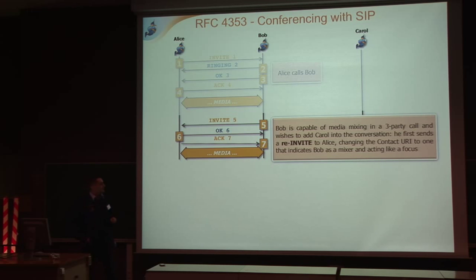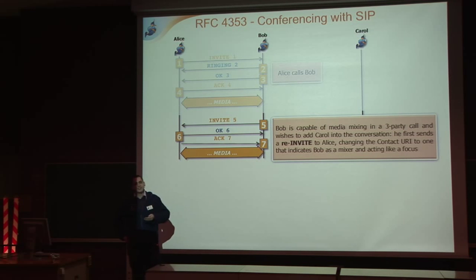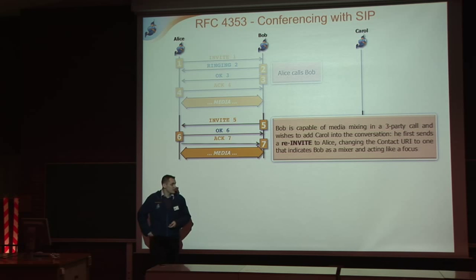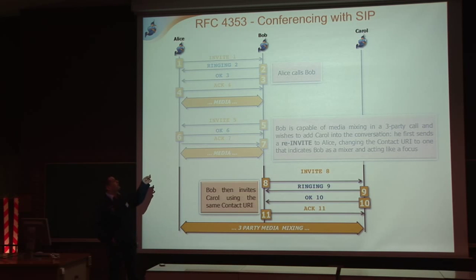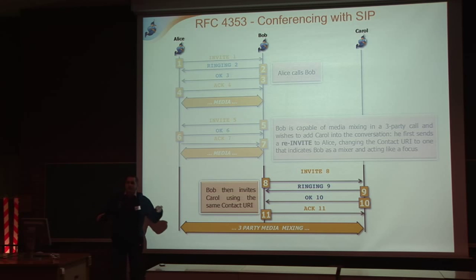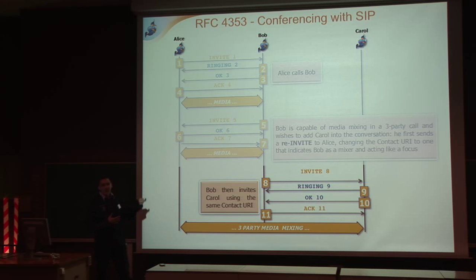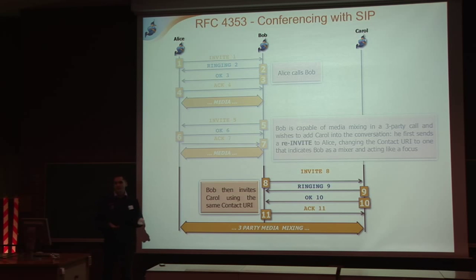If at one point Bob would like to add someone else to the conference, he would need to do two things according to the specification. First, he would re-initialize his existing call with Alice so that she knows this is no longer a one-to-one call — important because she may want to know whatever she says is potentially being heard by someone else. Second, Bob would start a simple call with Carol, indicating it is a conference call. Both Alice and Carol communicate with Bob only. It is up to Bob to mix packets from Carol with his own audio and send it to Alice, and vice versa. This is why agents like Bob are often referred to as mixers.